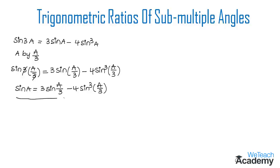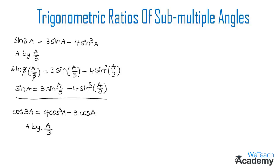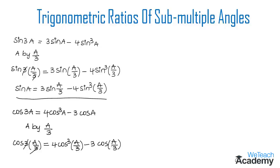This is the formula for the submultiple angle a by 3 in terms of sine. Now let us derive the formula for cosine. We need the multiple angle formula: cos 3a is equal to 4 cos cube a minus 3 cos a. Replacing a by a by 3, we get cos 3 into a by 3 equal to 4 cos cube a by 3 minus 3 cos a by 3. The 3s cancel, giving us: cos a is equal to 4 cos cube a by 3 minus 3 cos a by 3.